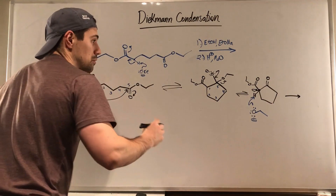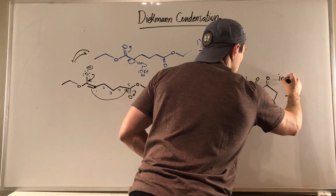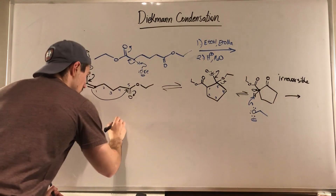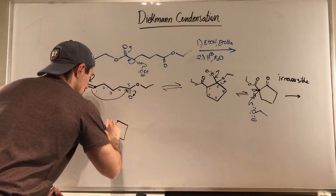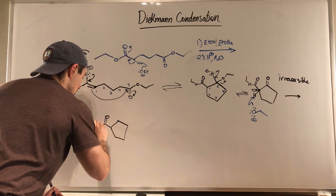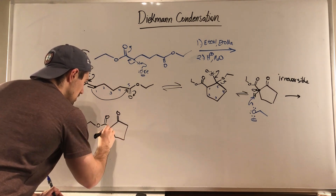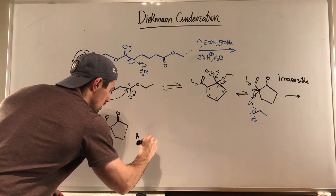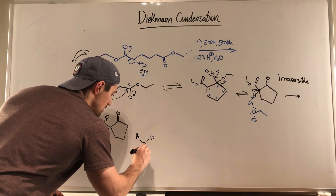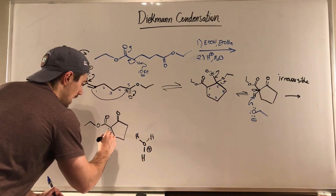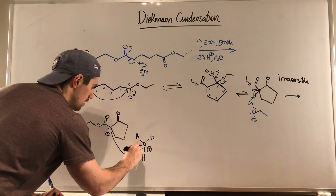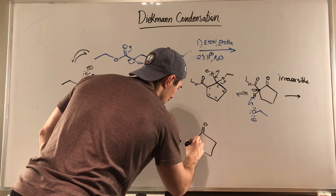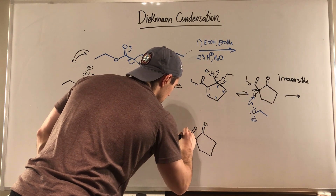This is the irreversible step — that's why the arrow looks different. And a lone pair right there. At this point we bring in our always-there friend, hydronium, and we complete our Dieckmann condensation. Just the cyclic Claisen.